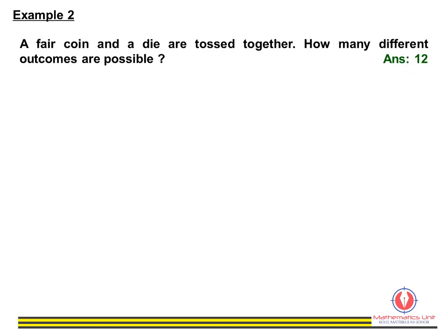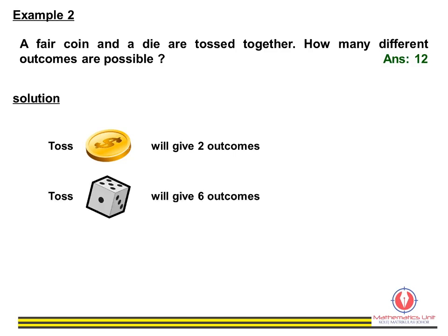Consider Example 2: a coin has two sides, so tossing a coin gives us two outcomes. A die has six sides, so tossing a die gives us six outcomes. Tossing both gives us two times six equal to twelve outcomes.